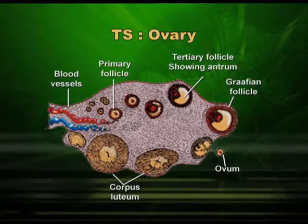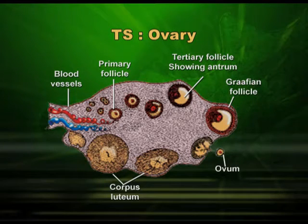Oogenesis is the formation of ova, which takes place in the ovary. Ova are formed through meiosis or reduction division, but the story of gamete formation is not the same way it happened in spermatogenesis. In both cases gametes are formed, but the process is slightly different. In the ovary you can see the Graafian follicle, ovulation taking place with ova coming out, and also the corpus luteum — a functional corpus luteum.